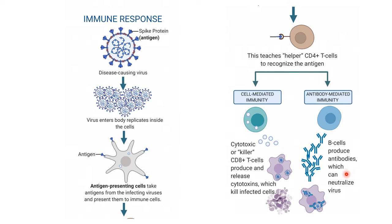Antibody mediated immunity is by the B cells, which produce immunoglobulins or antibodies that can neutralize the virus. Cell mediated immunity is by cytotoxic or killer CD8+ T cells, which produce and release certain cytotoxins that kill infected cells. This happens naturally in any disease process, but through a vaccine we can create this immune response without the disease.